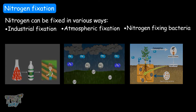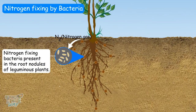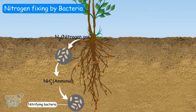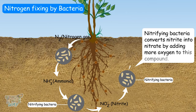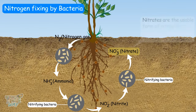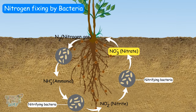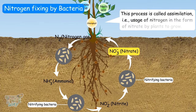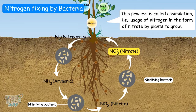The most important one is nitrogen fixation through nitrogen-fixing bacteria. Nitrogen-fixing bacteria present in the root nodules of leguminous plants converts nitrogen into ammonia — this process is called ammonification. Then, some nitrifying bacteria converts the ammonia into nitrite. Another variety of nitrifying bacteria then converts nitrite into nitrate by adding more oxygen. Nitrates are then usable and can be absorbed by plants to form amino acids, nucleic acids, and chlorophyll. This process is called assimilation — the usage of nitrogen in the form of nitrate by plants to grow.